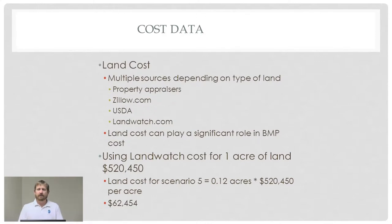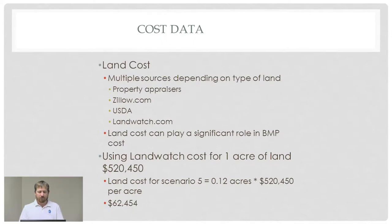Land cost is an important thing to consider when evaluating the cost of a BMP. If you're having to buy additional land, that needs to be accounted for. There are multiple sources that provide cost information: property appraisers, Zillow, USDA, and landwatch.com — all of these should be consulted when looking to provide land cost data for a specific project. For this example, we used Landwatch and found a cost for one acre of land at a little over half a million dollars. Additional land would only need to be purchased for Scenario 5. Scenarios 1 and 3 would still be contained within the original two acres, but for Scenario 5 we would need to purchase an additional 0.12 acres, which means an additional cost of a little over $62,000.